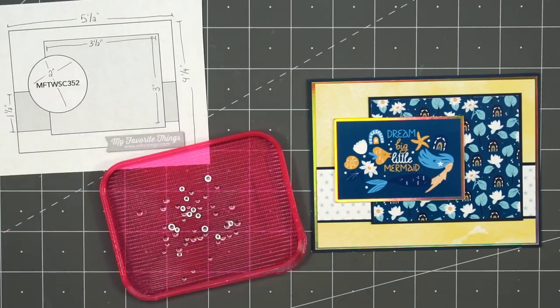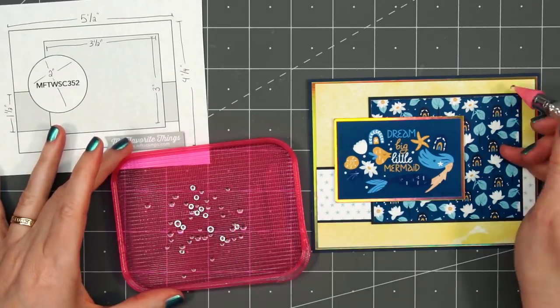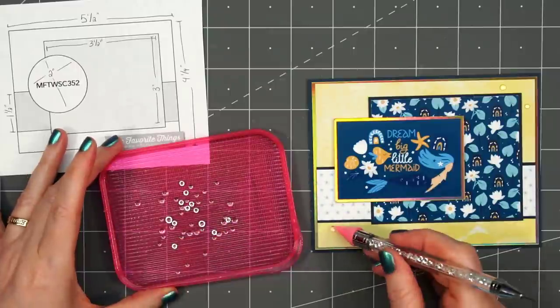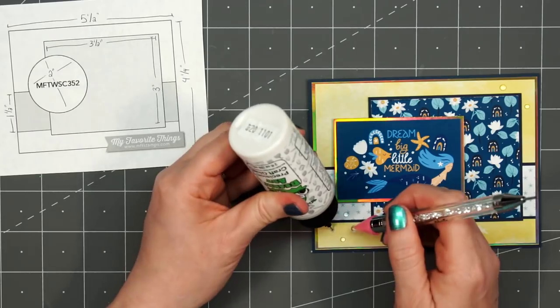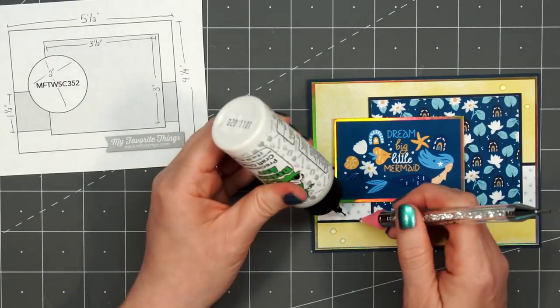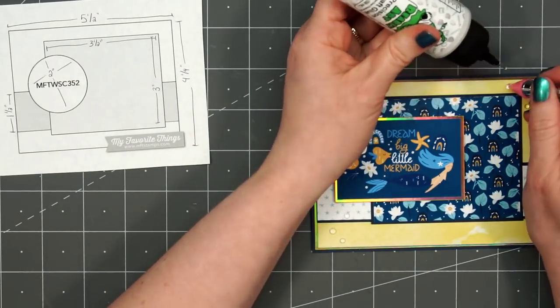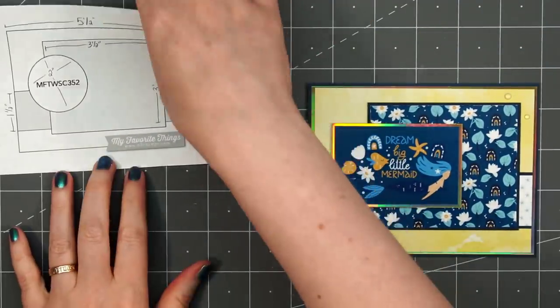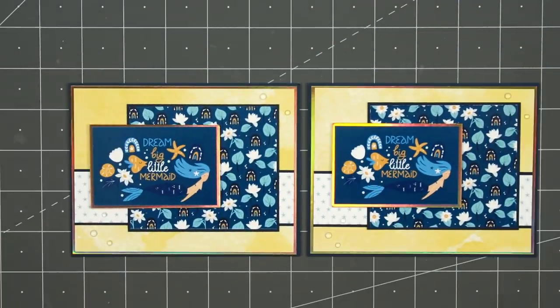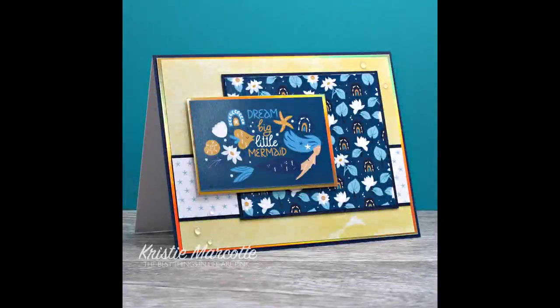Then to finish off the card, I'll bring in some more of the clear dew drops. I think it just works well with this underwater paper collection. I'll add two in the upper right hand corner and three in the lower left hand corner. And there is my finished card. Overall, it's a fairly simple card design, but I think adding those little touches with the dew drops and the holographic cardstock really make a difference.